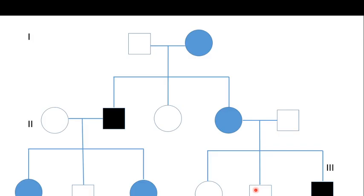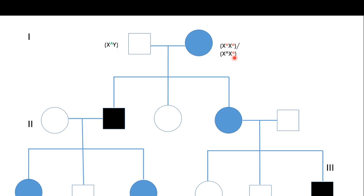Now let's look at a pedigree example of X-linked dominant genetic disease. This pedigree has three generations. In generation one, there is a normal male and an affected female. The normal male's genotype shows one X chromosome carrying the normal copy of the gene. The affected female could be in the homozygous or heterozygous condition, so we must examine the offspring to determine which.